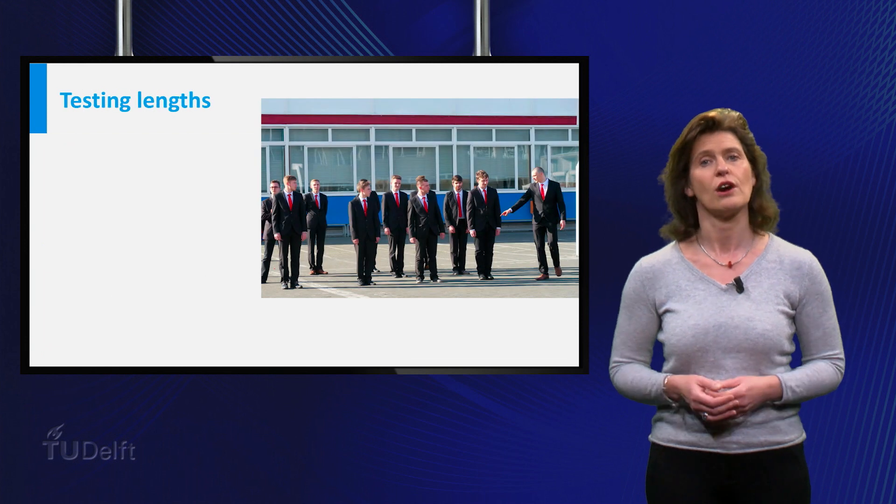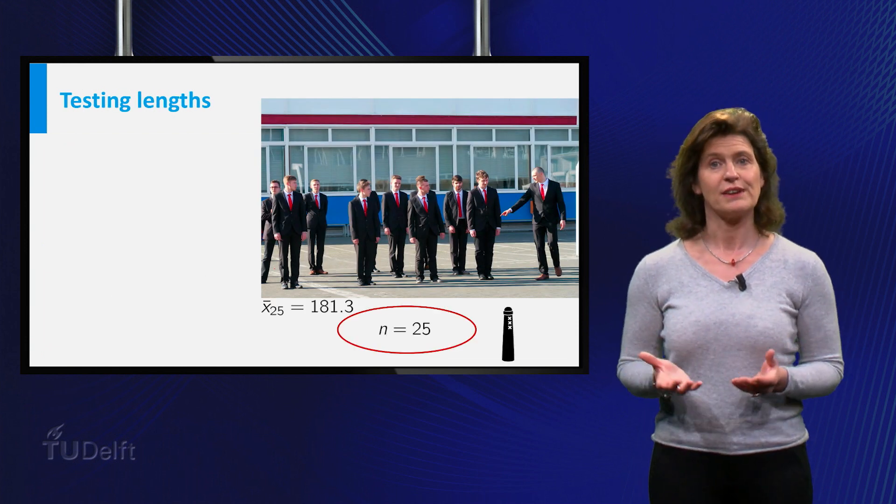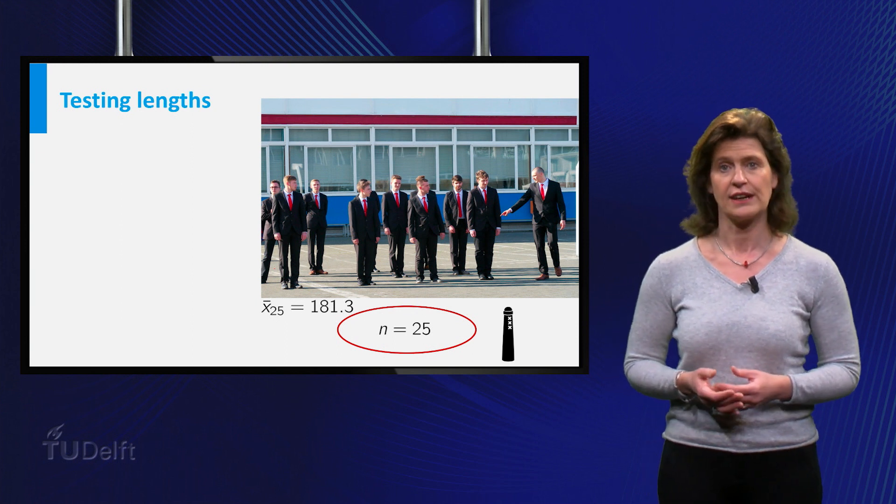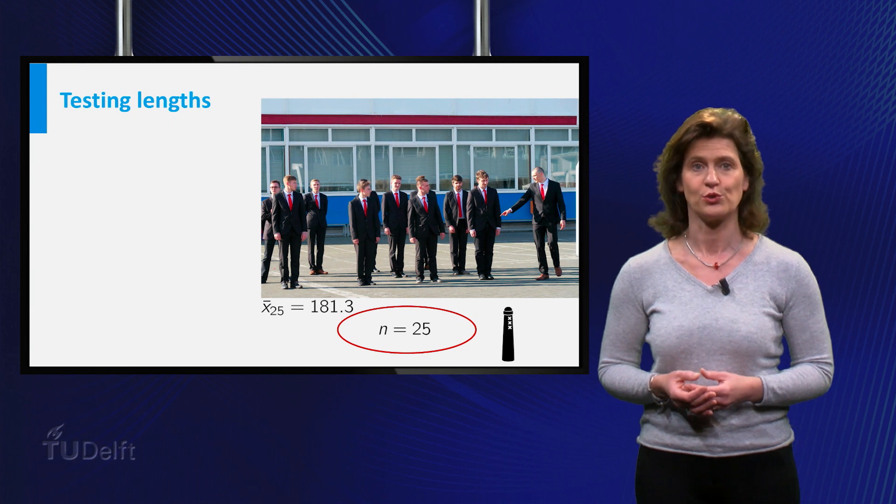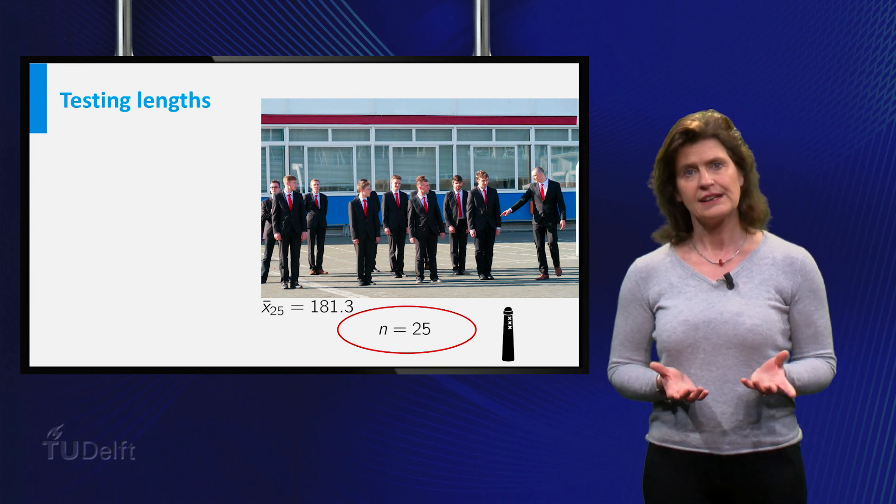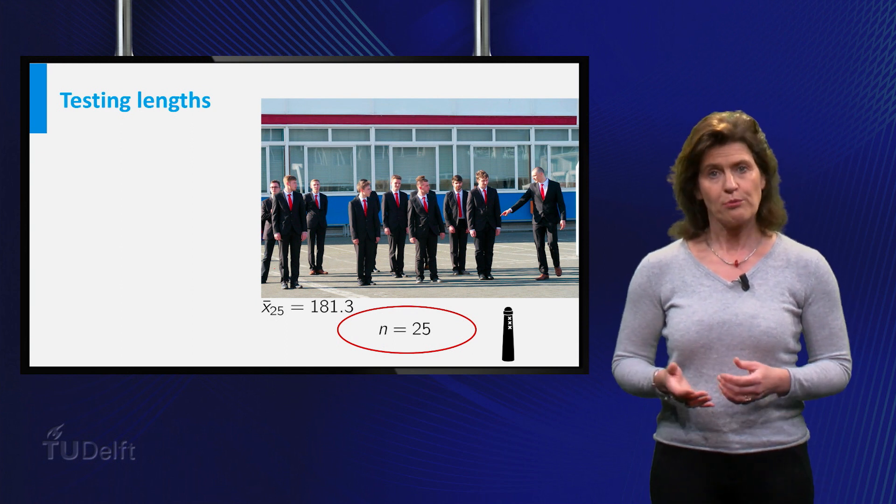Now let's go back to our example of student's length. So statisticians picked 25 Amsterdam students at random and found their average length was 181.3 cm. Is it a coincidence that the mean length is below the national mean length or not? What hypothesis do you test?